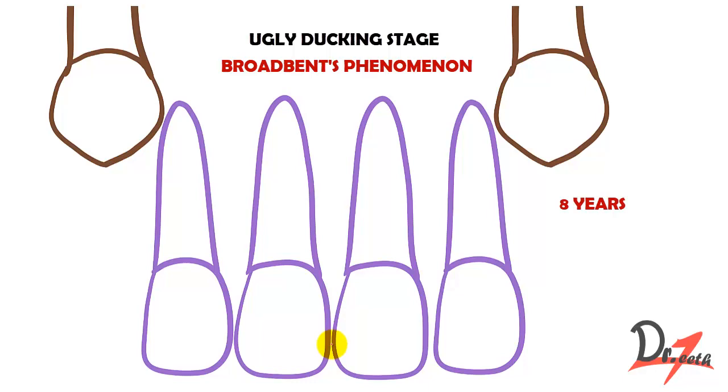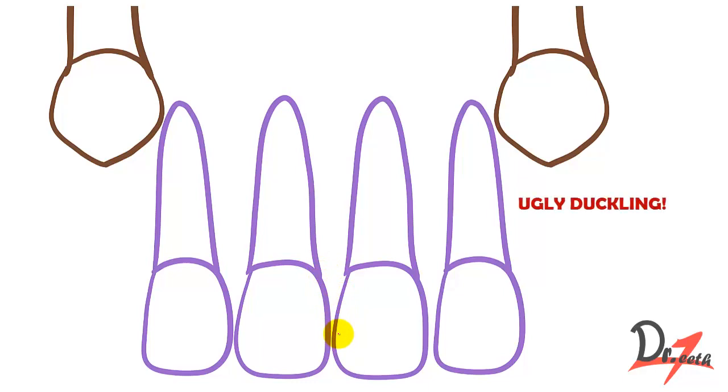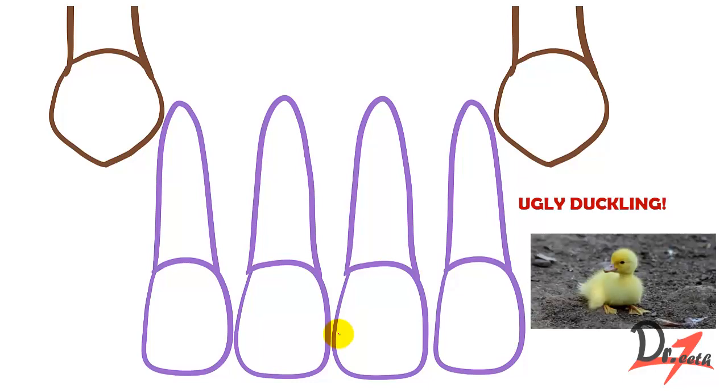Parents usually come to the orthodontist or general dentist saying that their child has midline diastema, that is spacing between their teeth, and that looks very ugly. That is why it is called the ugly duckling stage. Duckling is the kid of a duck, and this phenomenon occurs in children.